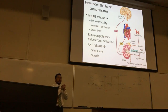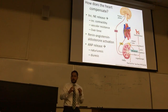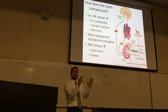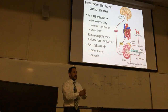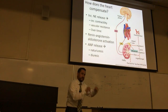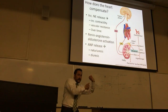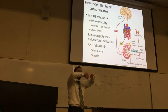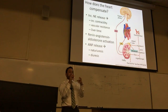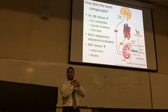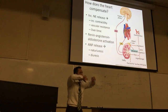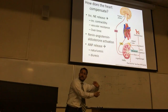Norepinephrine increases contractility — the heart beats more forcefully. The heart beats in a wringing motion: take a T-shirt, fold it in half, dip it in a bucket of water, and wring it out — you get more fluid out by wringing than just squeezing. That's how the heart beats, in a wringing motion. Contractility is the forcefulness of that twisting contraction.